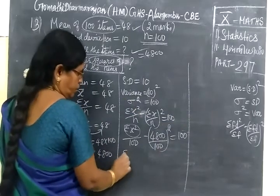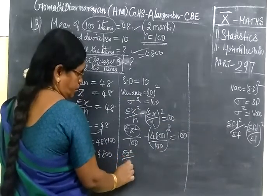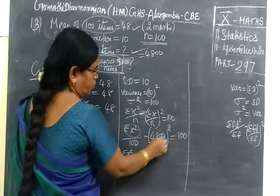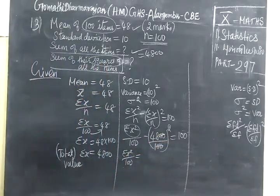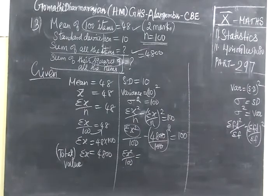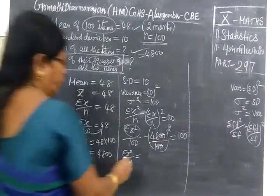So sigma X square by 100. 48 square, so 48 square equal to 2304.